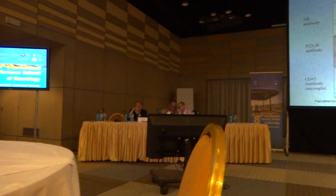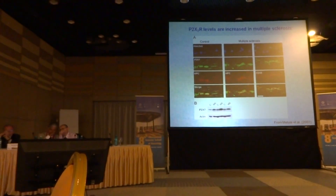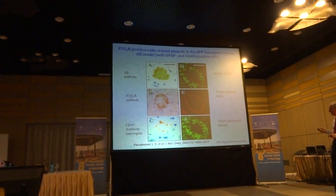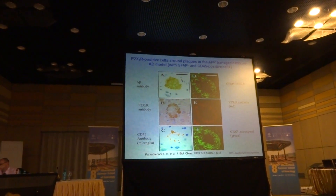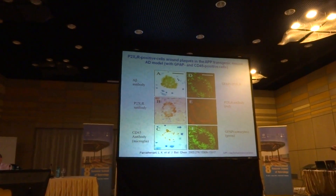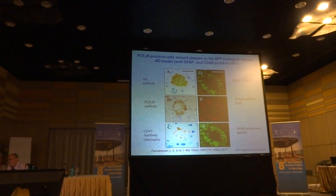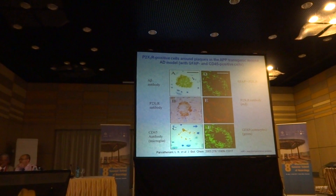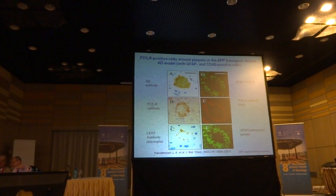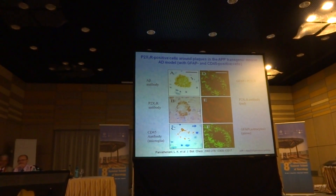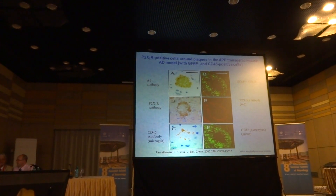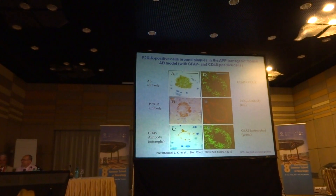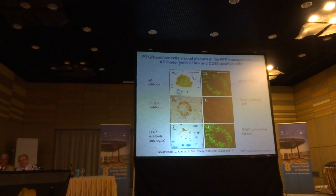These are those individuals that have these plaques. What you see is the plaques are cells that stain for CD45, microglia, also astrocytes, which stain for GFAP, with an acidic protein. You also find around the plaques both astrocytes and microglia, but also these cells stain for P2Y7 receptor.